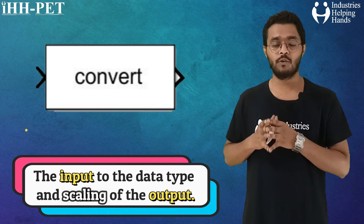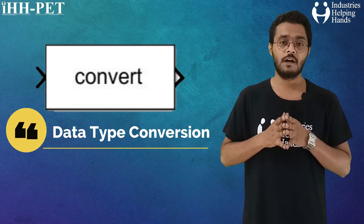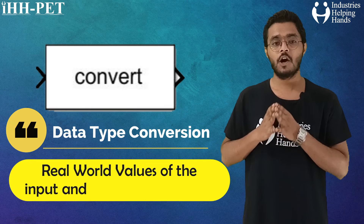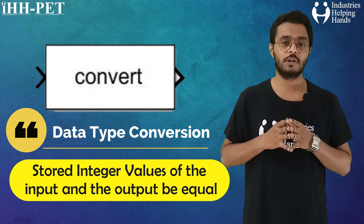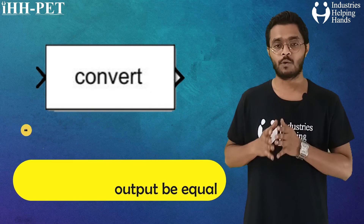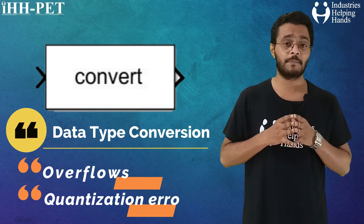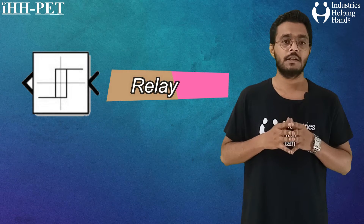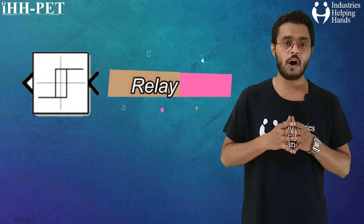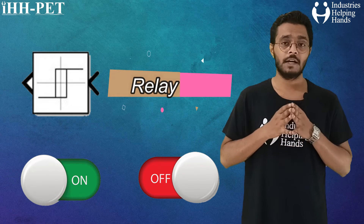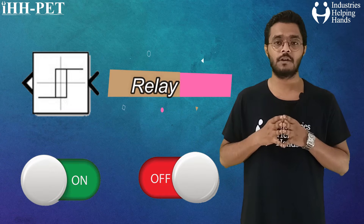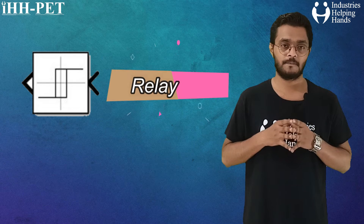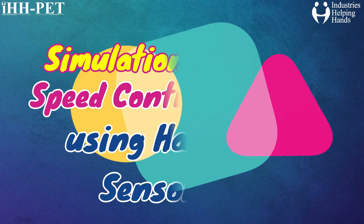The data type conversion has two possible goals: one is to have the real-world values of the input and output be equal, and the other is to have the stored integer values of the input and output be equal. Overflows and quantization errors can prevent the goal from being fully achieved. We have also used a relay block, in which the output is a specified on or off value by comparing the input to specified thresholds. The on or off state of the relay is not affected by input between the upper and lower limits. Let us now move forward and start today's simulation.